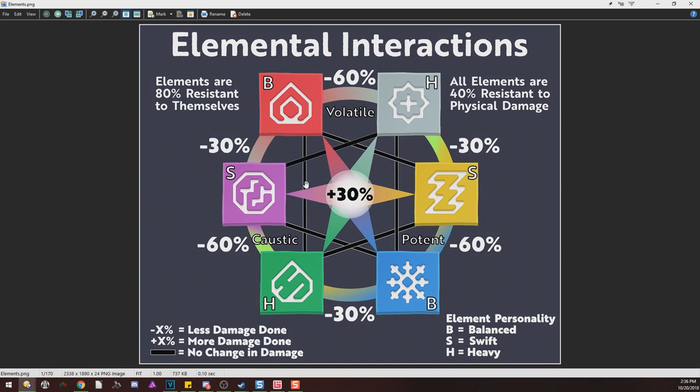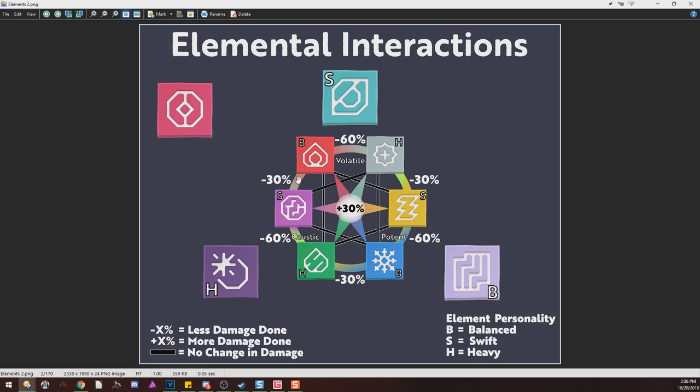So that covers the elemental interactions pretty nicely. If we come over to this next picture, I went ahead and threw in the special materials. As you can see, we have our Volatile, Caustic, and Potent, and then here are the parent elements: Blink, Dark Matter, and Rift. Theoretically, the special or primal elements will have a rock-paper-scissors relationship between them, where one will counter the other, which will counter the other, and so on.